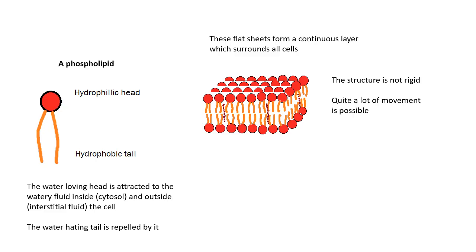We end up with a flat sheet which forms a continuous layer surrounding the cell. As I said before, this structure is not rigid. There's quite a lot of movement possible.